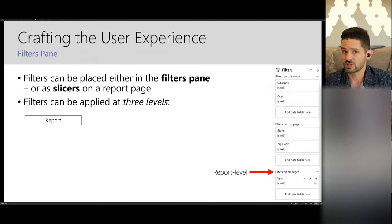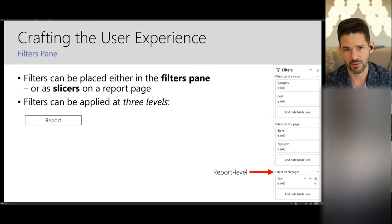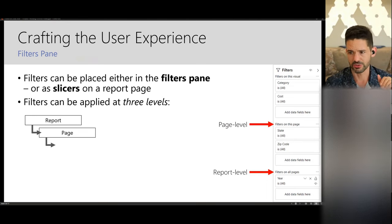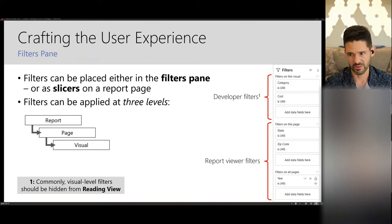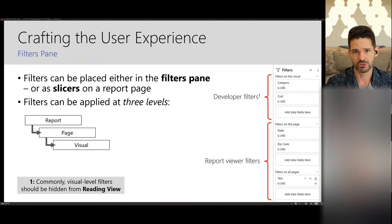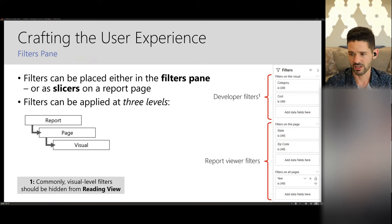Another really important thing is the filters pane — it's not used as often as it could be. It requires some considerations around how you want to use it and making sure it's not too complicated for users, especially around report level, page level, and visual level filters. Visual level filters are almost always something that should be hidden and set by the developer — like a top N filter or filtering out blanks from a slicer. Rarely should a user apply a filter to a single visual on a page.